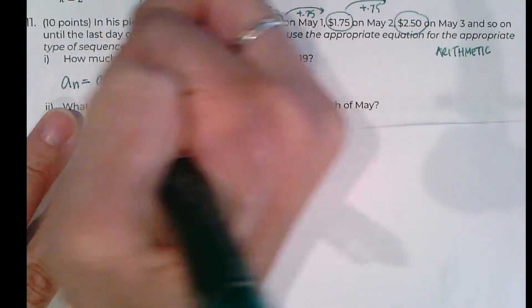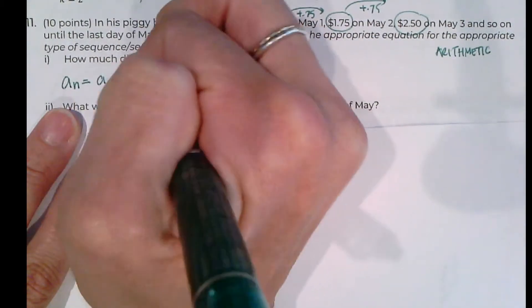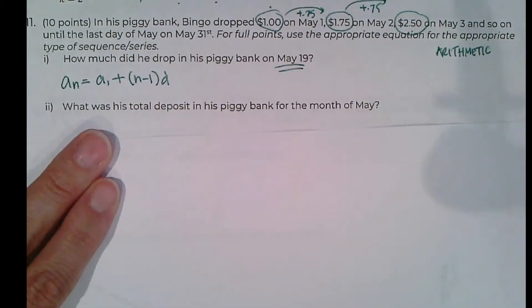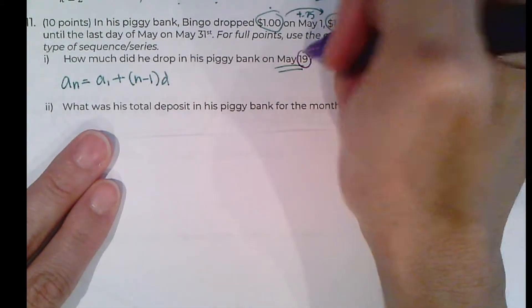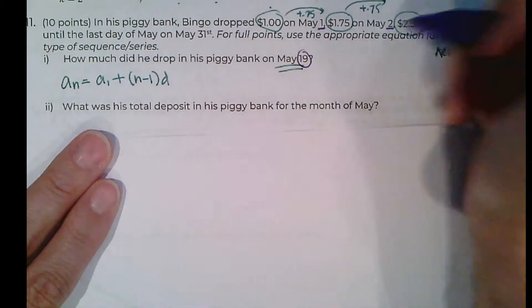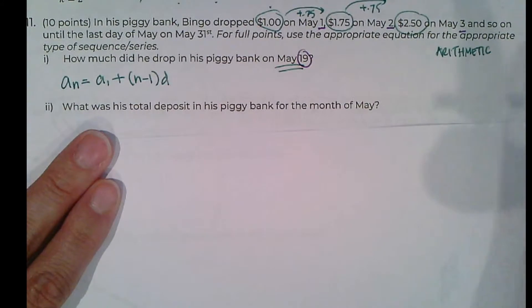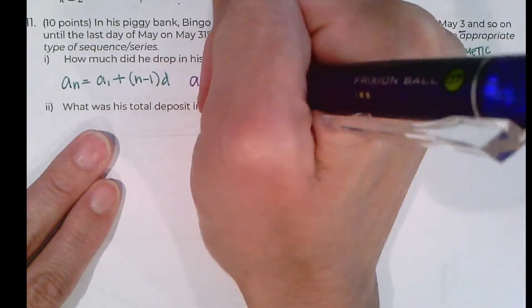I know this formula. I'm going to write this down and get those points. And then I could actually solve the problem. It says that we want to do this for the 19th day. This is the first day, the second day, the third day. So we're looking for A_19.